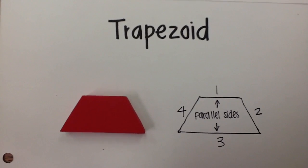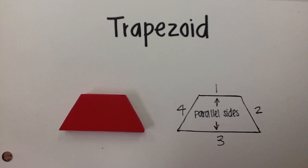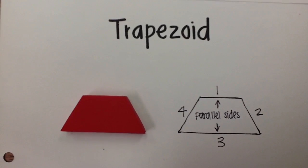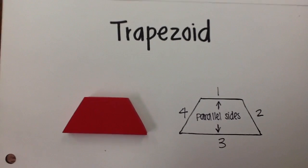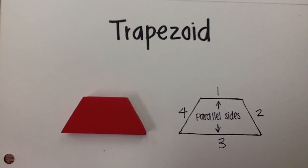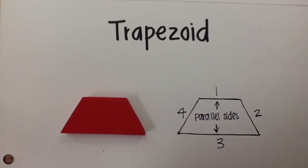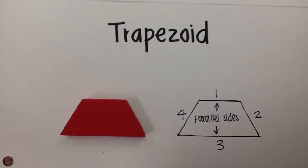The second shape is a trapezoid. It has four sides and two of those sides are parallel. In the pattern blocks it is red. It is the second largest shape you will be working with.